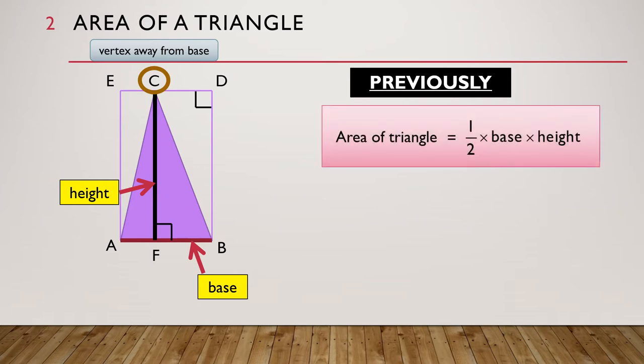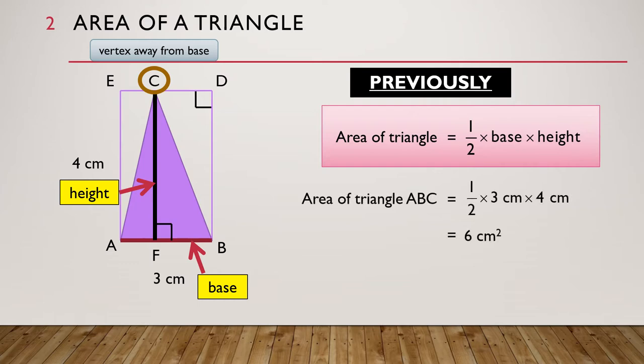We can find the area of the triangle using half times base times height. Let's say the base AB is 3 cm long and the height CF is 4 cm. Then the area of triangle ABC is equal to half times 3 cm times 4 cm, which is equal to 6 cm².